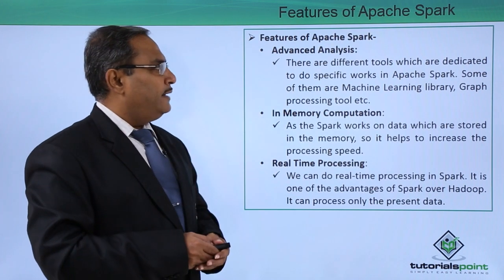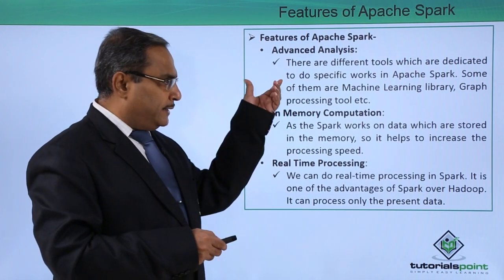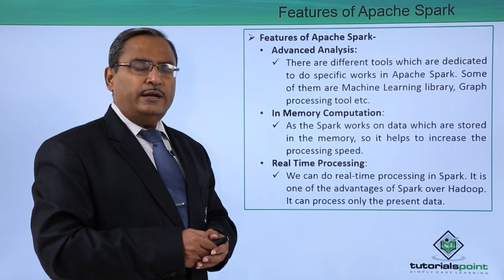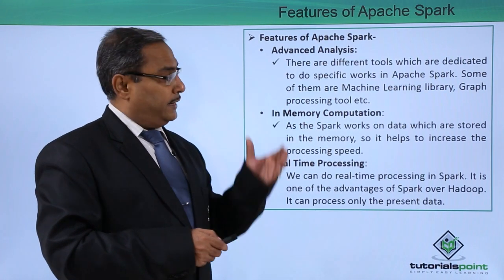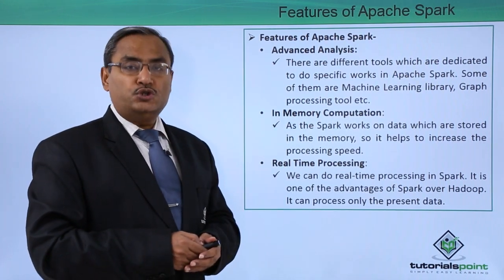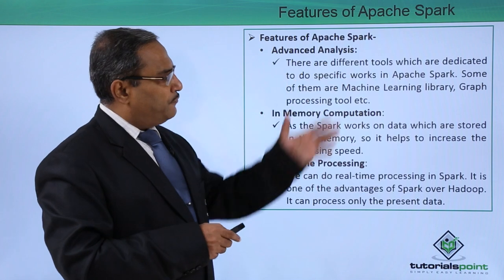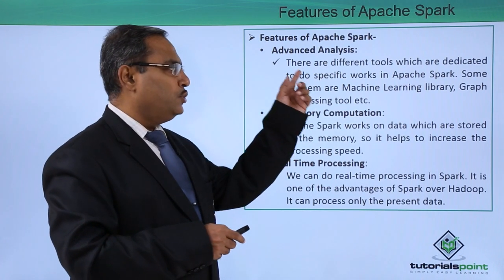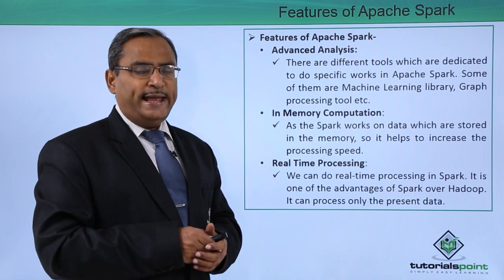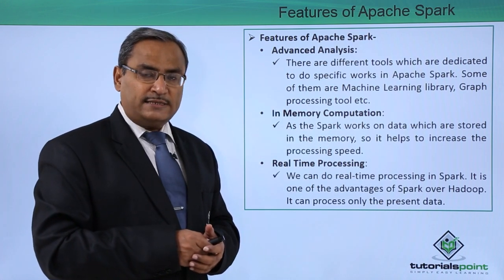Next one is advanced analytics. Advanced analytics means there are different tools which are dedicated to do specific works in Apache Spark. In our Apache Spark components, we have shown that in the ecosystem there are 6 different components, and those tools are dedicated for different kinds of analysis-oriented activities — some of them are the machine learning library also known as MLlib, the graphics processing tool also known as GraphX, and more.